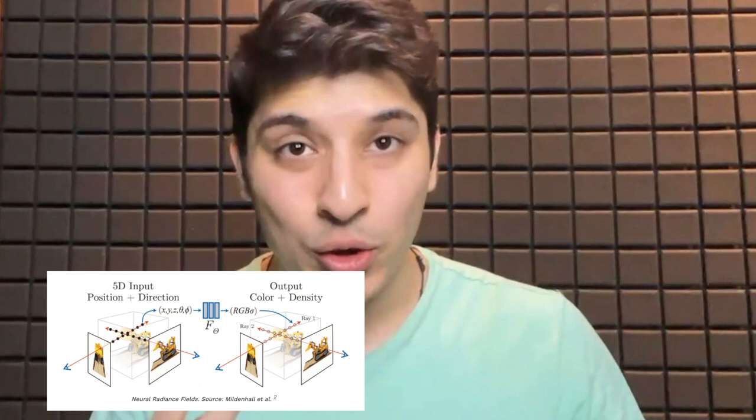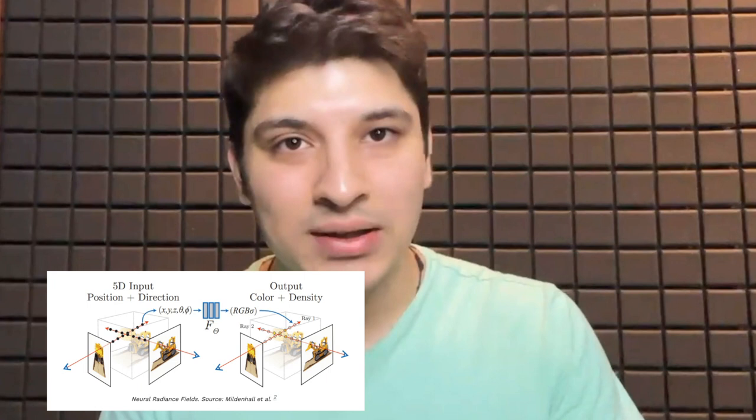These points and the corresponding 2D viewing directions are used as input to the neural network to produce an output set of colors and densities. Classical volume rendering techniques are then used to accumulate these colors and densities into a 2D image.